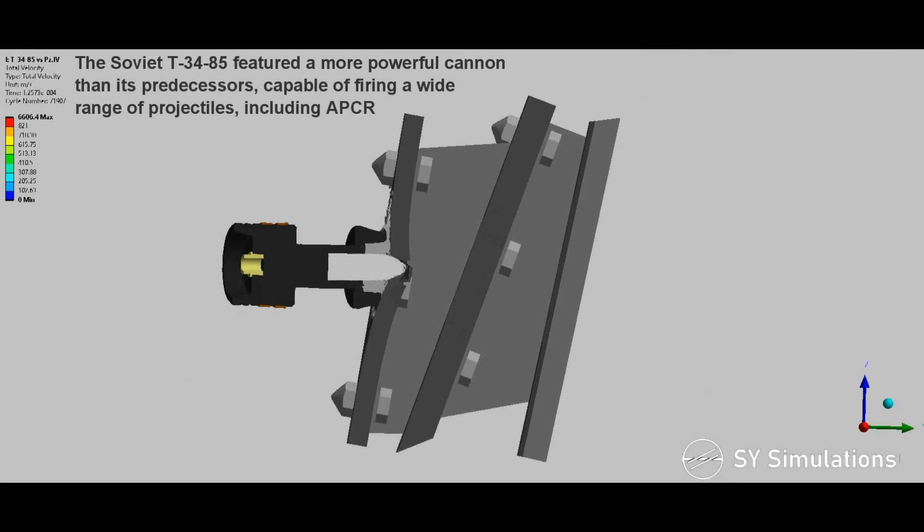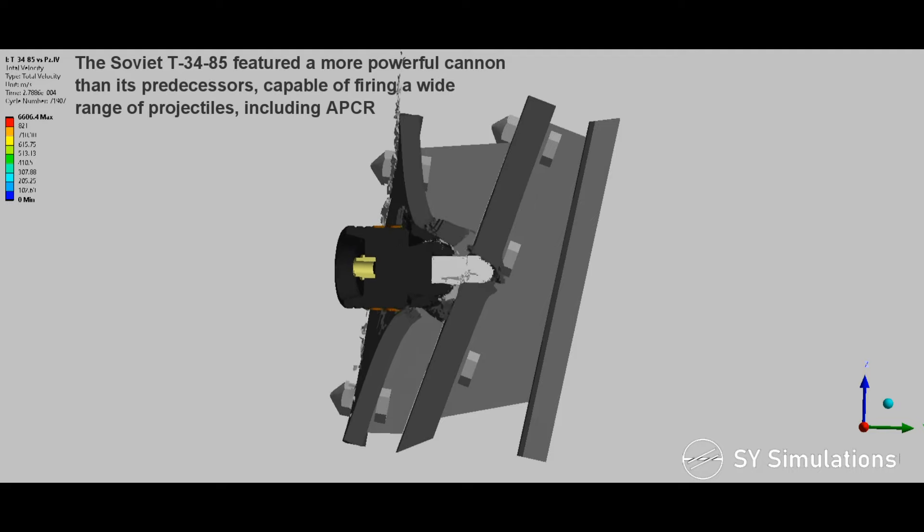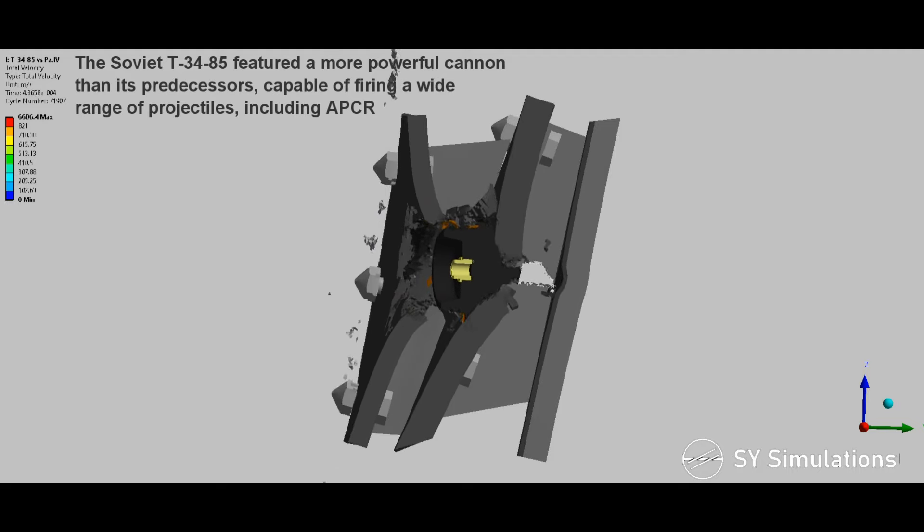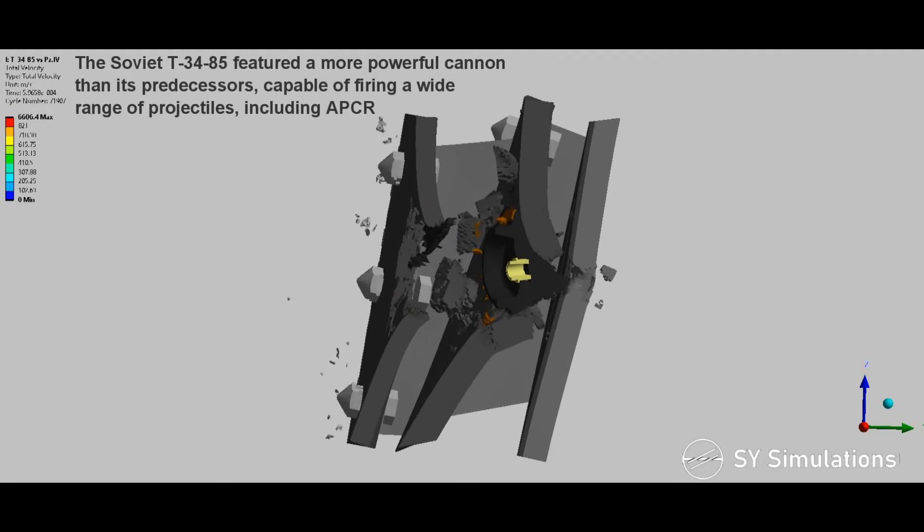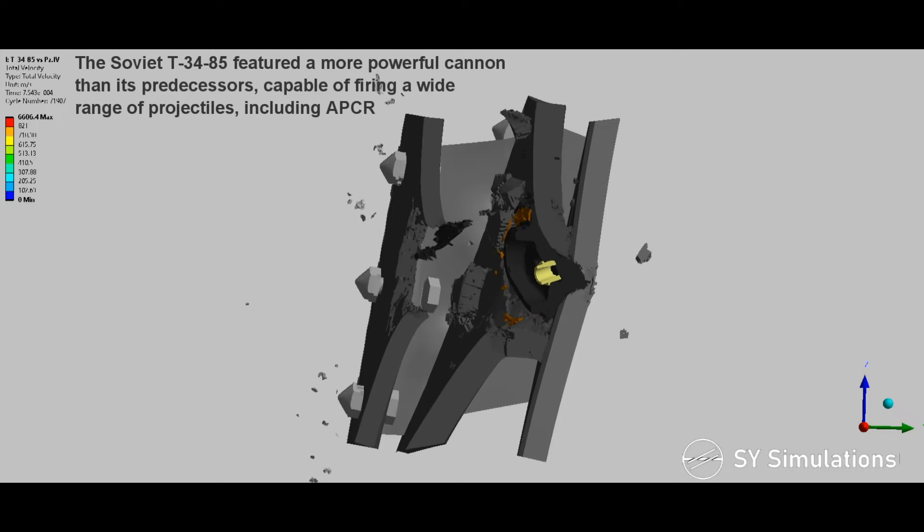The Soviet T-34-85 featured a more powerful cannon than its predecessors, capable of firing a wide range of projectiles, including armor-piercing composite rigid.